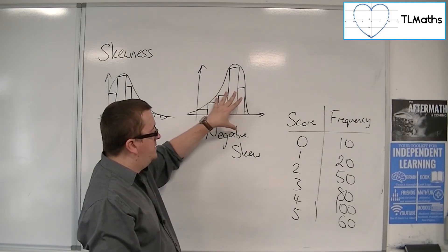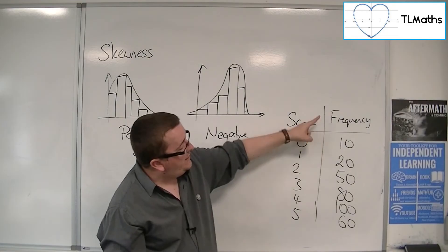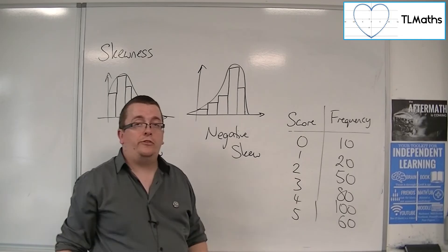It would look similar to this. And you could see that the tail is running off in the negative direction. And so this would have negative skew.